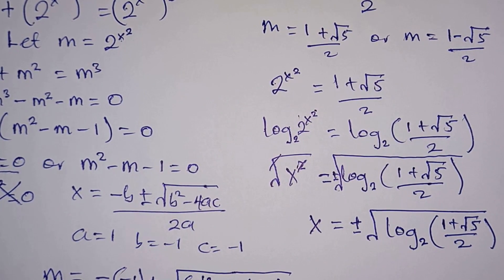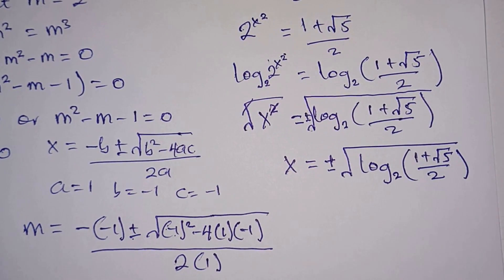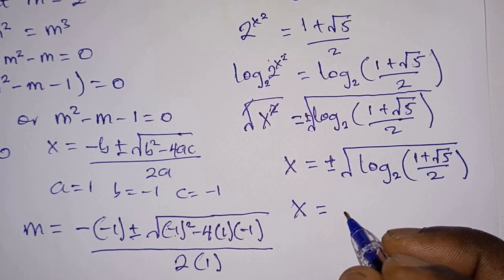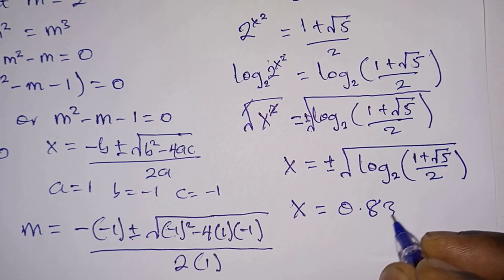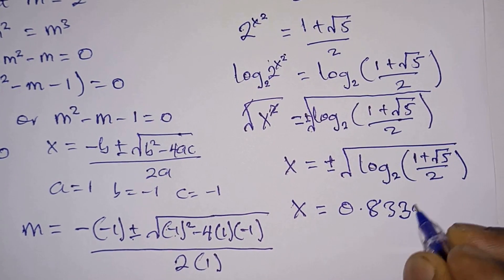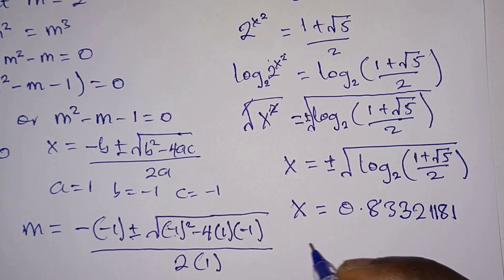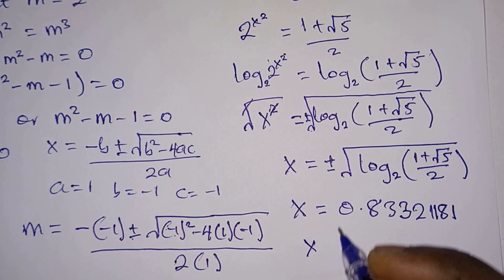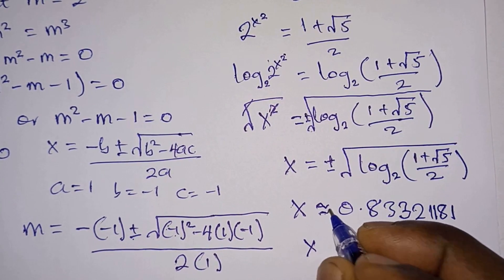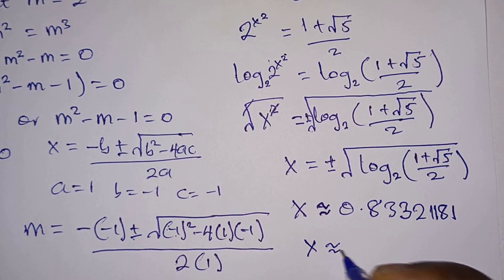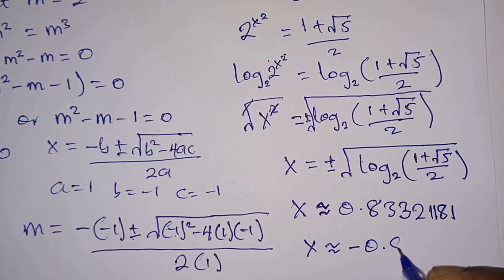So if you use a calculator for this, you'll get two values of x. On the positive side we will have x ≈ 0.83321181. Then the negative side you'll get x, I mean approximately, it's not the exact value, it's approximated value, so you have the negative side we have x ≈ -0.83321181.